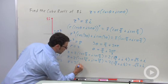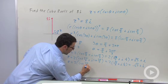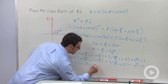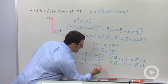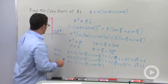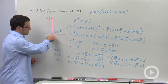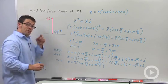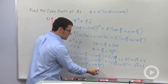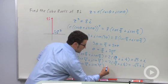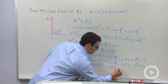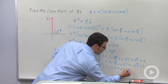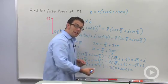So z equals 2 cosine 3 pi over 2 plus i sine 3 pi over 2. And this one's easy. 3 pi over 2 is this downward direction. The cosine of 3 pi over 2 is 0. And the sine of 3 pi over 2 is negative 1. So I get 2 times 0 plus i times negative 1. In other words, negative 2i.